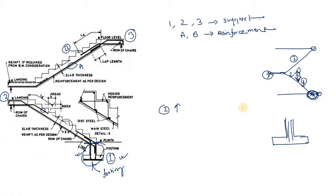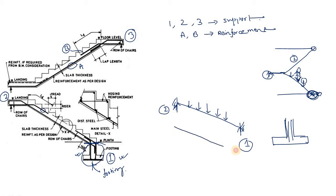Consider point one and point two as two supports of a beam with a UDL applied to it. Both ends are fixed, so the bending moment diagram looks like this: there is negative bending moment near the supports and positive bending moment in the middle span. Positive bending moment means tension is at the bottom, so reinforcement needs to be provided at the bottom — which is why you can see the bottom reinforcement provided along the flight. Near the support zones, tension is at the top, so reinforcement must be provided there.